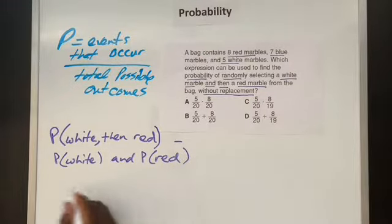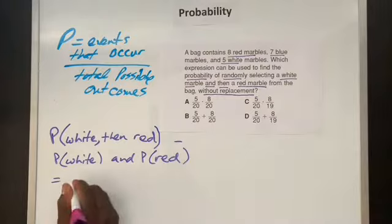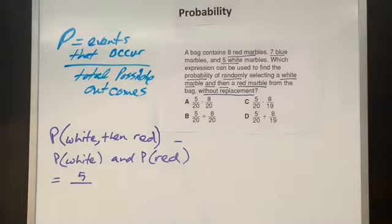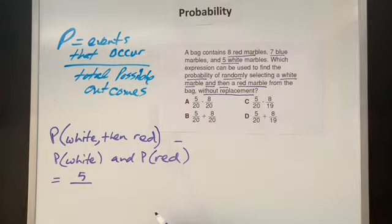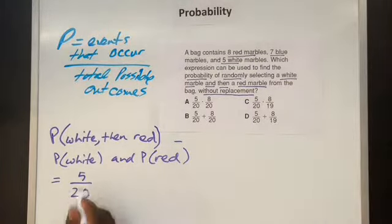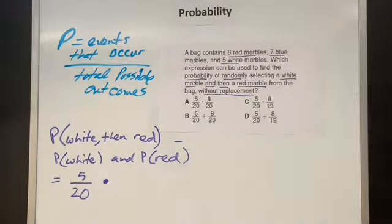So we go ahead and substitute that. Let's write the ratio for the probability of selecting a white marble. So it tells us we have five marbles, so that's going to be five in the numerator. And how many in the denominator? That's total possible outcomes. Eight plus seven, that is 15, plus five is 20. So that's five out of 20. So if we select one, that's the probability. And then when it says then, we're going to multiply that.